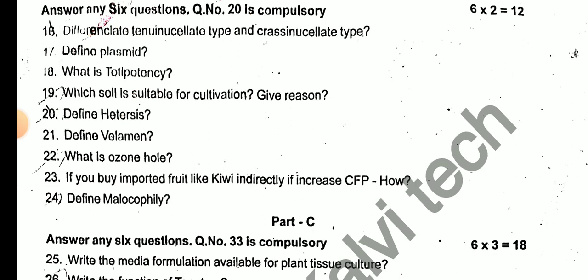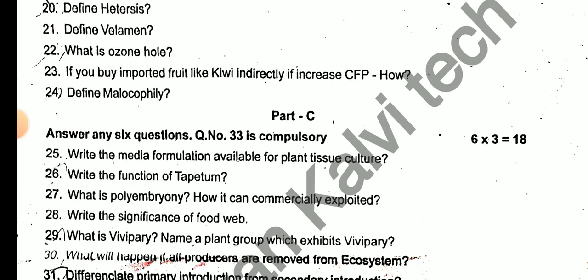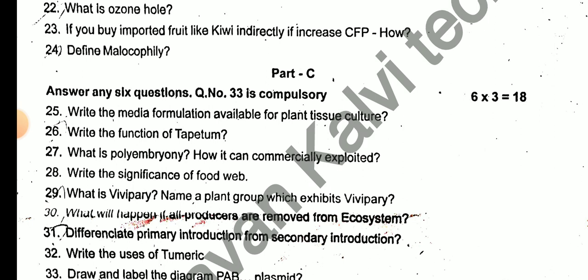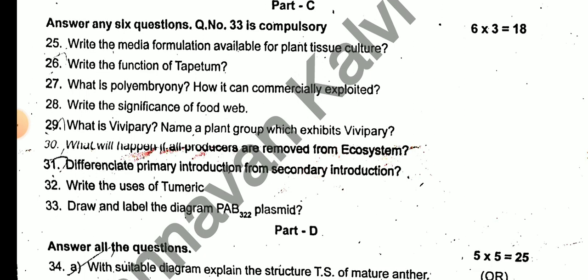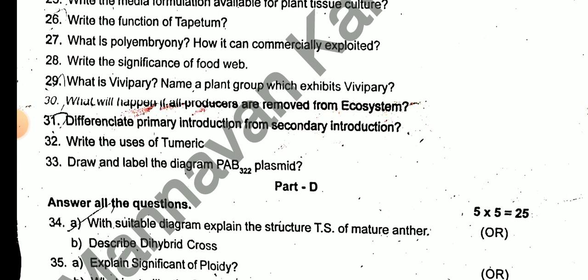Write the media formulations available for plant tissue culture. Write the function of tapetum. What is polyembryony? How can it be commercially exploited? Write the significance of food web. What is Vivipary? Name the plant group which exhibits Vivipary. What happens when all producers are removed from the ecosystem? Difference between primary and secondary introduction. Write the uses of dermarcation. Draw and label a diagram of PBR plasmid.